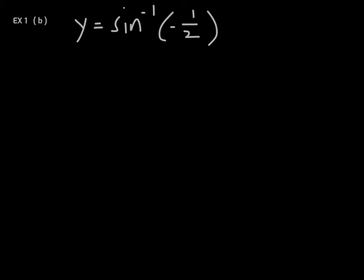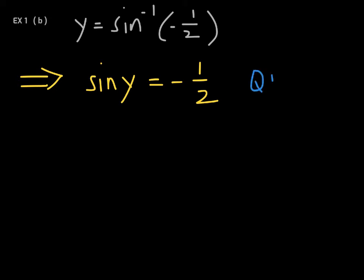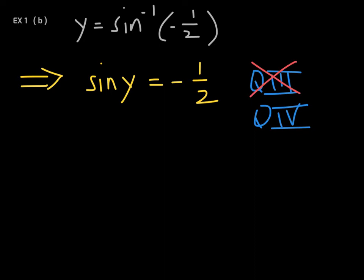Next example: y equals inverse sine of negative 1/2. This means sine of y equals negative 1/2, so y is the angle whose sine is negative 1/2. There are two quadrants where sine is negative — quadrant three and quadrant four. Quadrant three is not allowed because the range for inverse sine only covers negative π/2 to positive π/2. Since the value is negative, we need quadrant four.